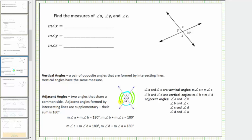Notice angle A and angle B share a common side — these angles are adjacent and also supplementary. Angle B and angle C are adjacent angles and are also supplementary. Angle C and angle D are adjacent and supplementary, as well as angle A and angle D.